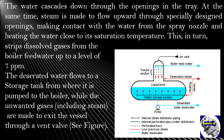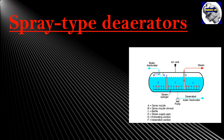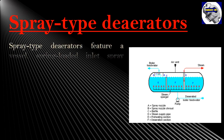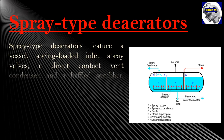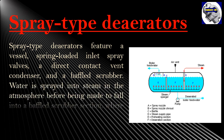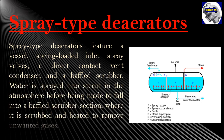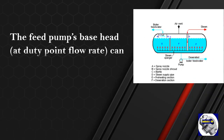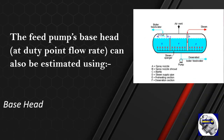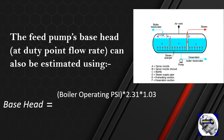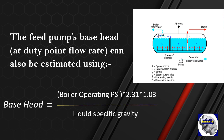Spray-type deaerators feature a vessel, spring-loaded inlet spray valves, a direct contact vent condenser, and a baffled scrubber. Water is sprayed into steam in the atmosphere before being made to fall into a baffled scrubber section, where it is scrubbed and heated to remove unwanted gases. The feed pump's base head can also be estimated using this formula: Base head = (Boiler operating pressure × 2.31 × 1.03) ÷ liquid's specific gravity.